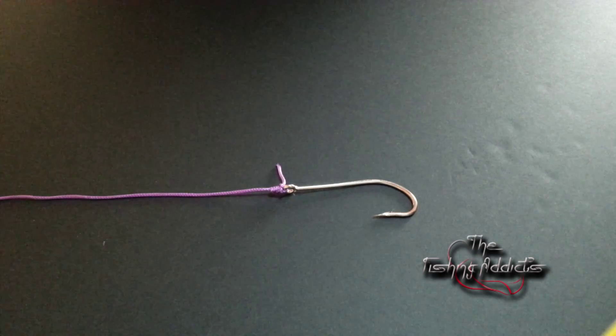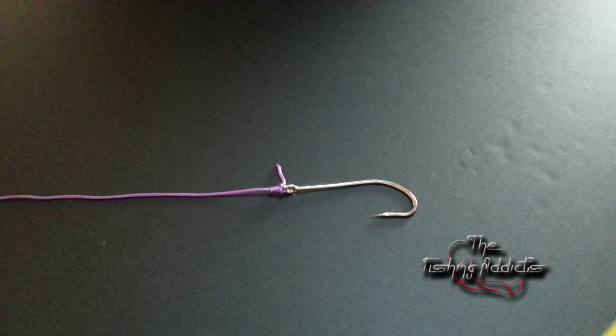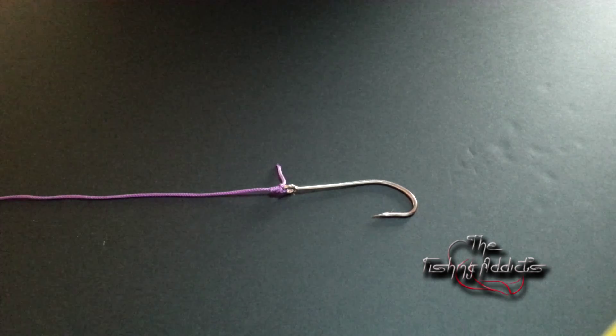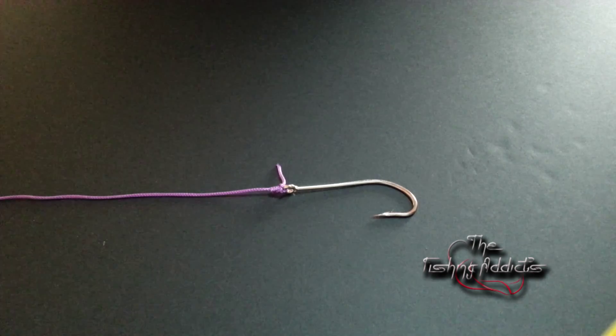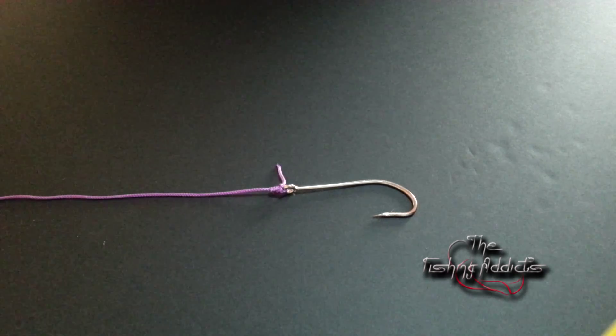So that's the tucked blood knot. You can use that on all your rigs and connecting your hooks to your hook or your swivels, and even your leader onto swivels and weight clips or anything like that. Really strong knot, and because you've tucked it, it doesn't tend to slip.